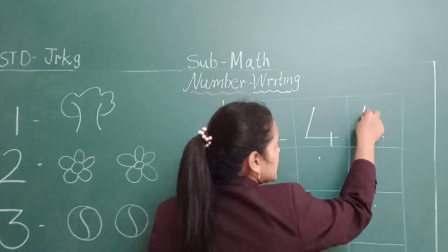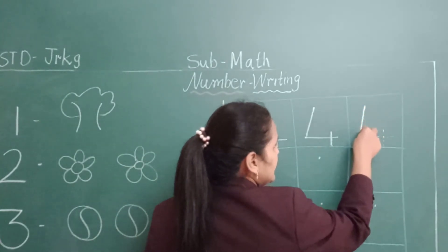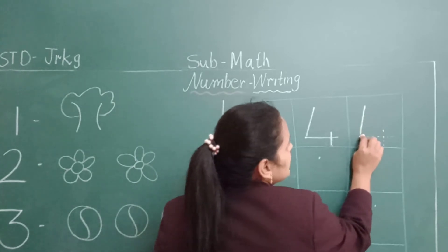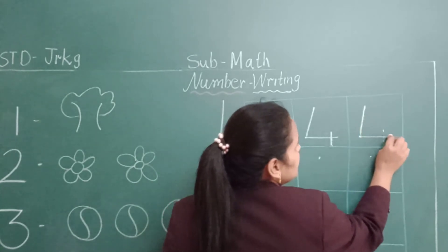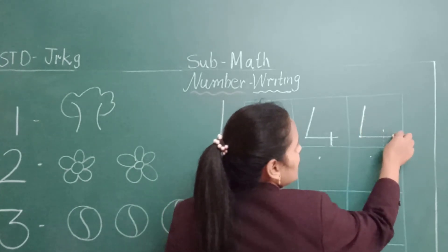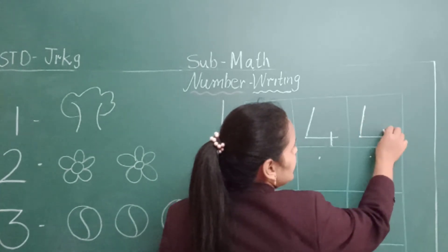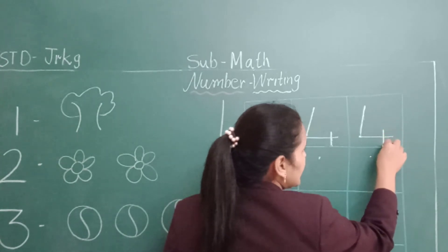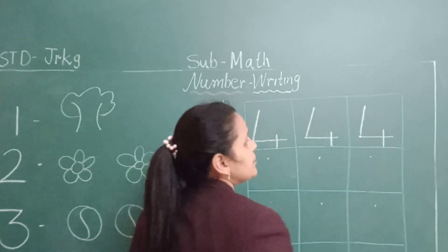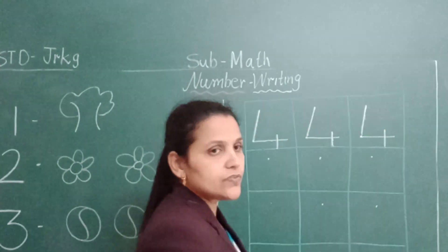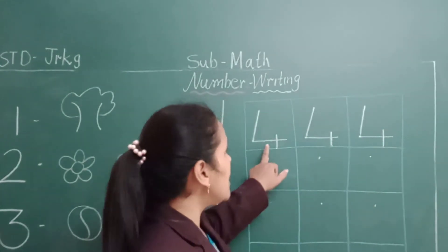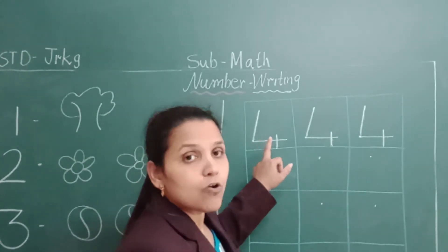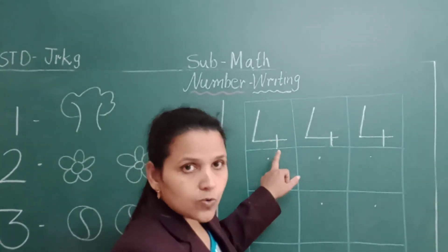Take one slant line, slipping line, after that one small standing line. This is a number four. What is this? Four.